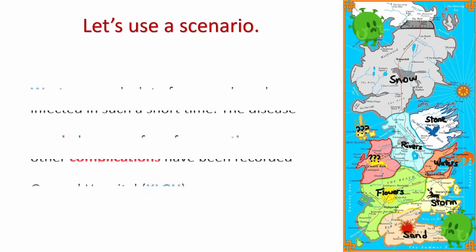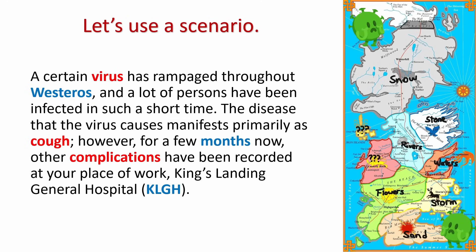To guide us with the discussion, let us look at a hypothetical scenario. A certain virus has rampaged throughout Westeros, and a lot of people have been infected in a short time. The disease manifests primarily as cough. However, for a few months now, other complications have been recorded at King's Landing General Hospital, or KLGH. We will use this scenario throughout the discussion to provide hypothetical examples of each step. If you see this logo in the succeeding slides, the examples are based on this scenario.